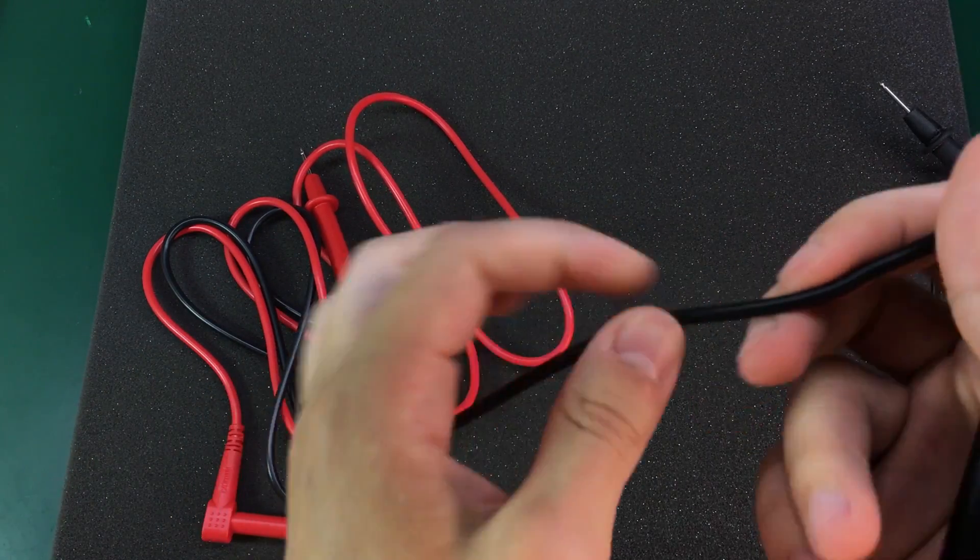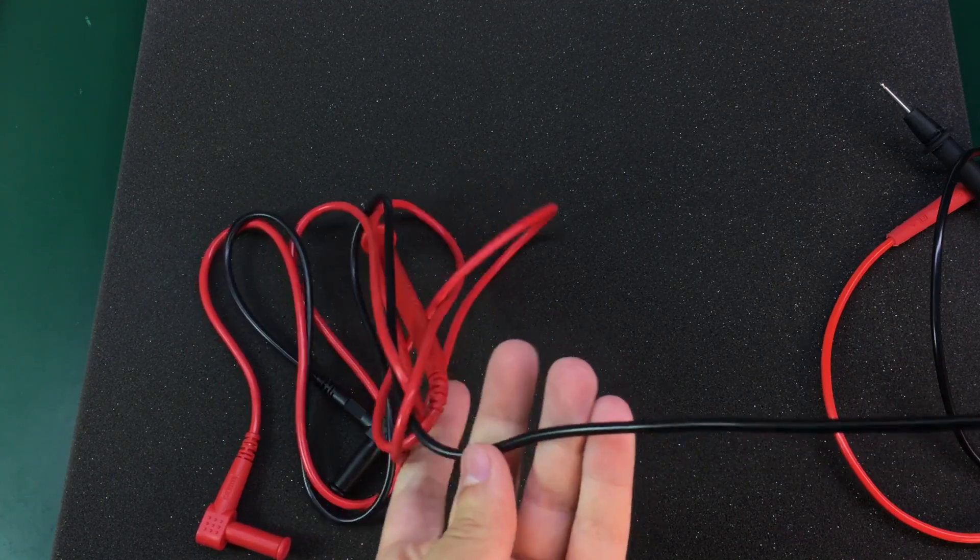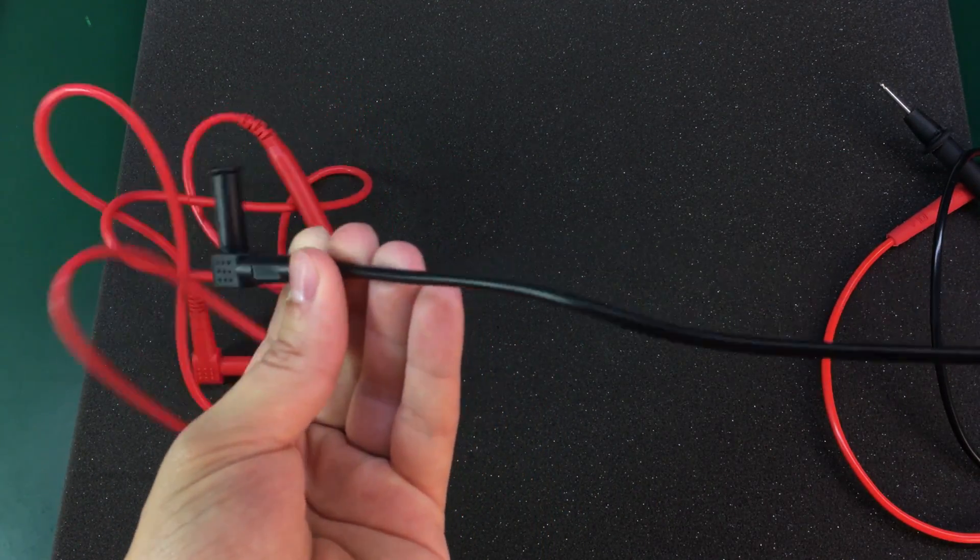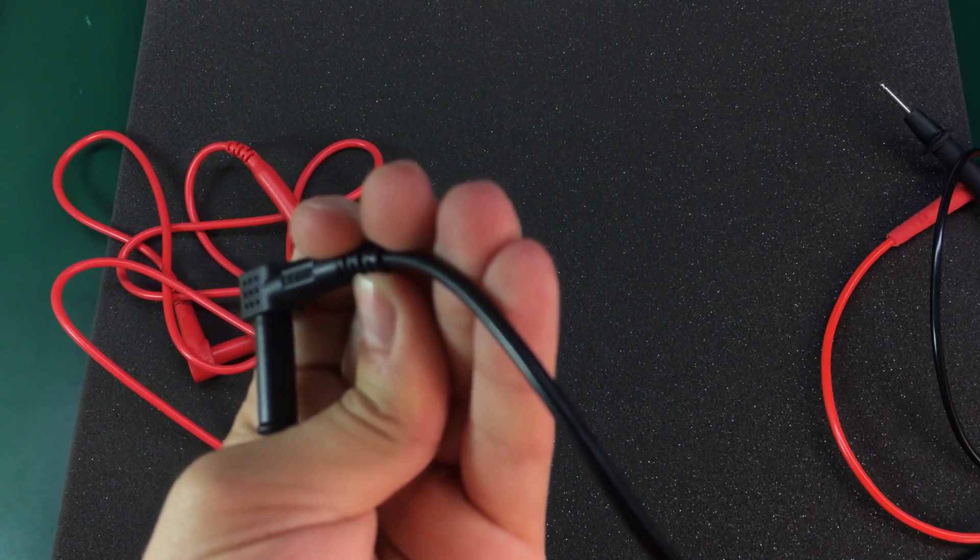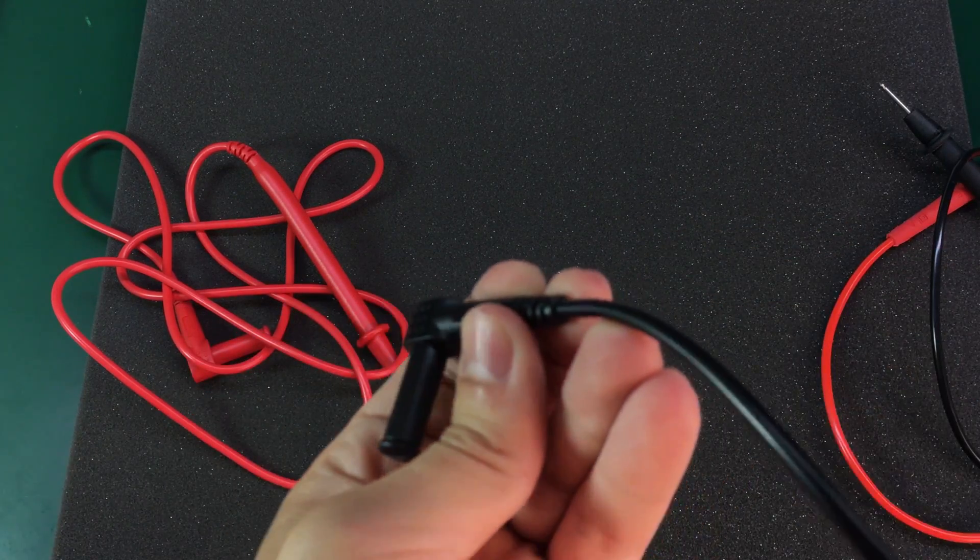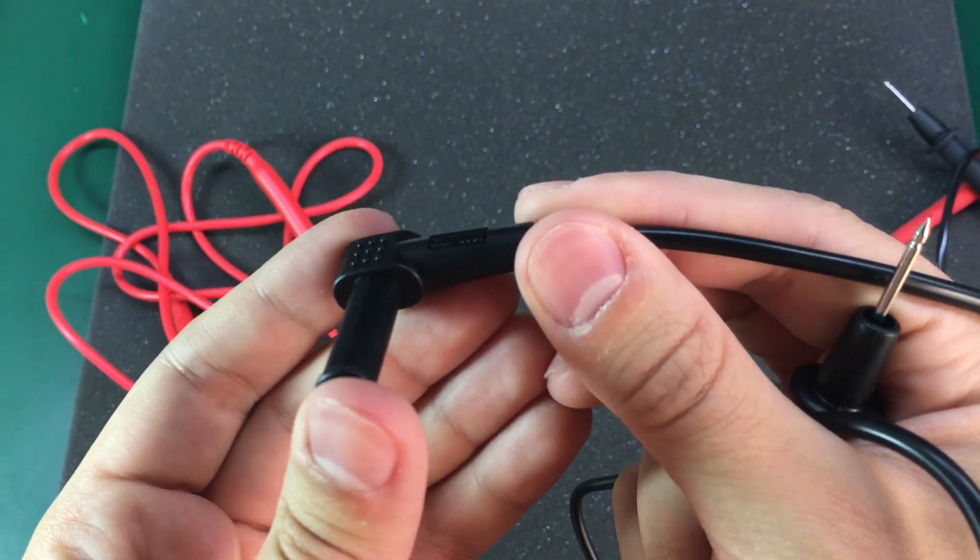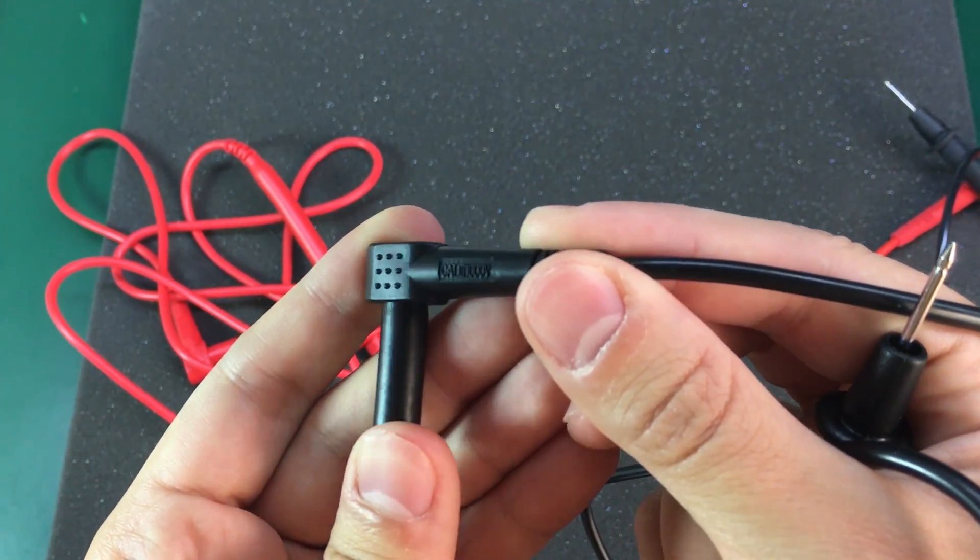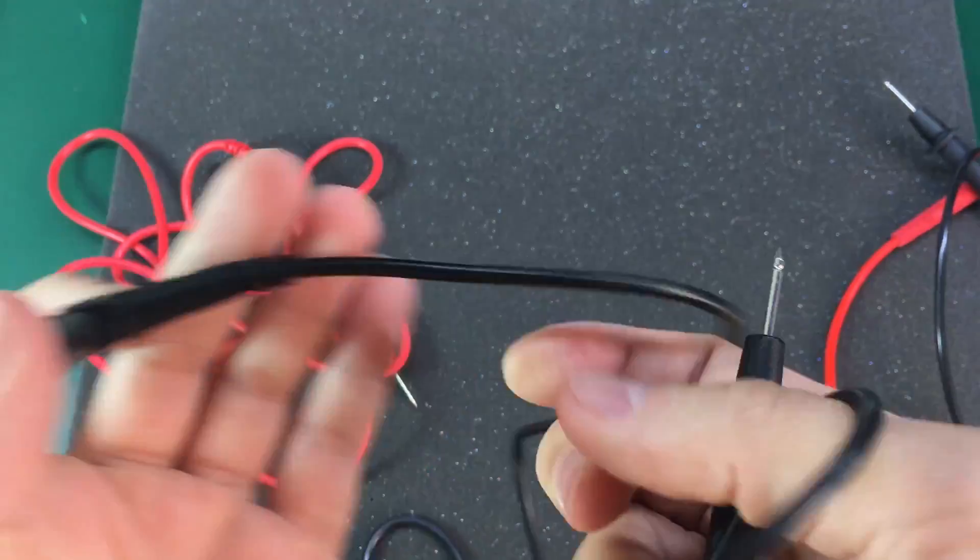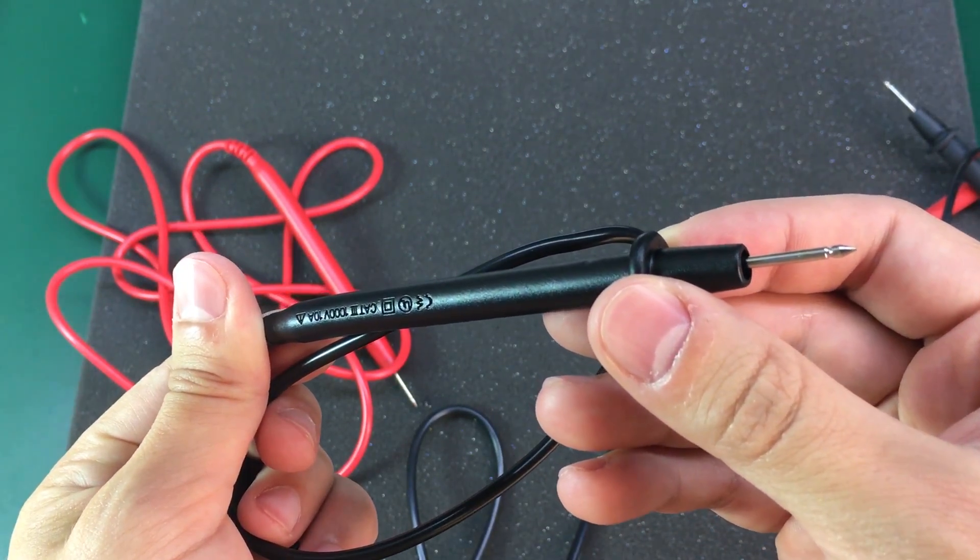Let's check if these ones from eBay have any markings on the wire. And no, it appears they don't have any markings on the wire. But they do have markings on the connectors. So no markings on the wire, but they are rated CAT III 1,000 volts, also on the probe handle.